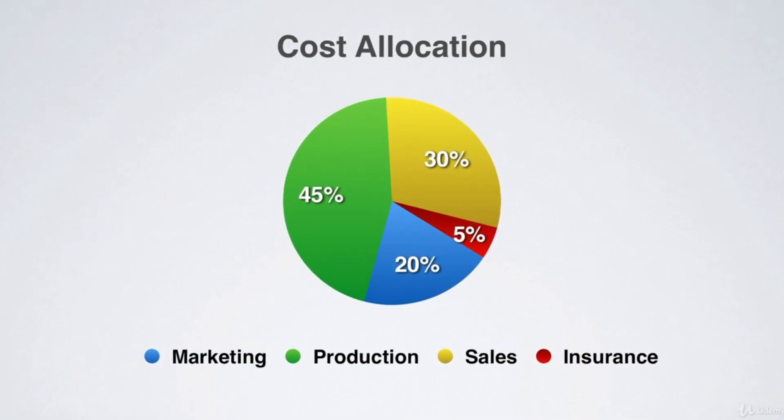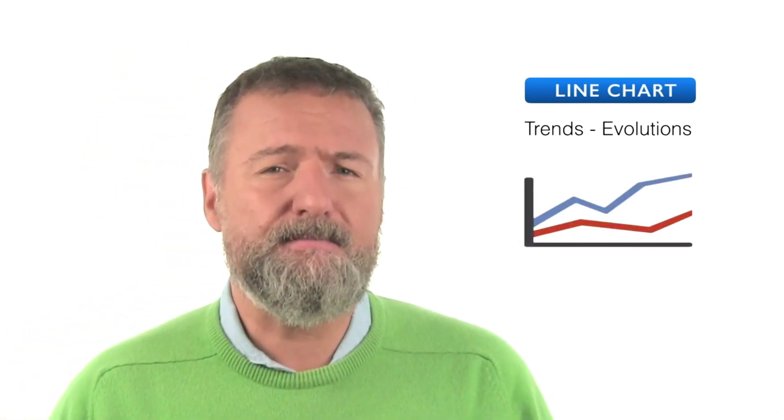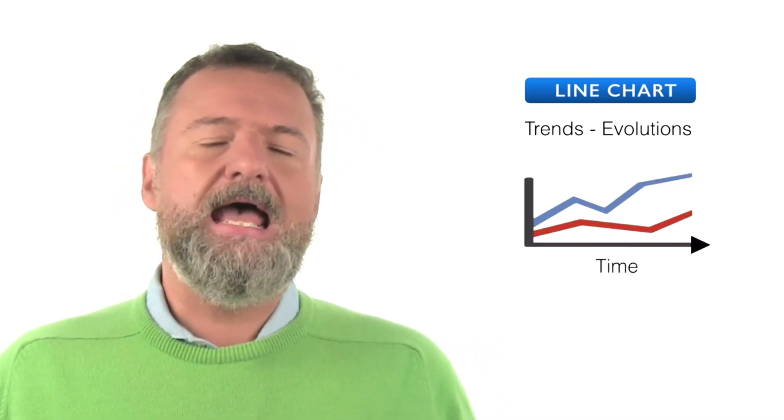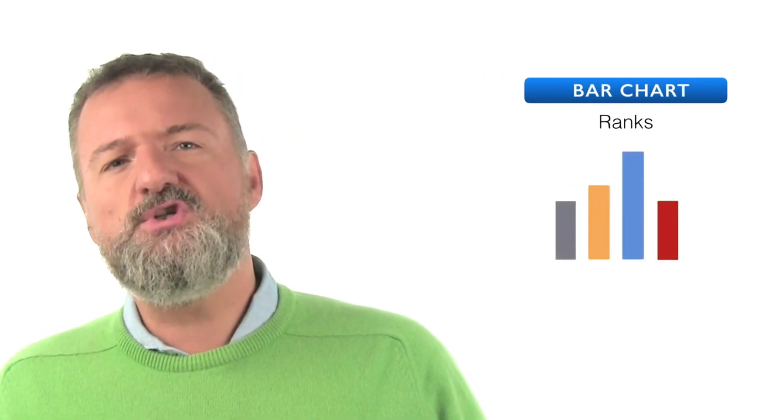Pie charts represent proportions or percentages — for instance, the man/woman balance at the workplace, or like in this example, cost allocation of a product or service. The second type are line charts, which are perfect to represent trends or an evolution in time. Mostly the horizontal axis is the timeline and the measured value is represented on the vertical axis. Column or bar charts are used to represent ranks under different conditions — for instance, to show the turnover of a product in different regions.